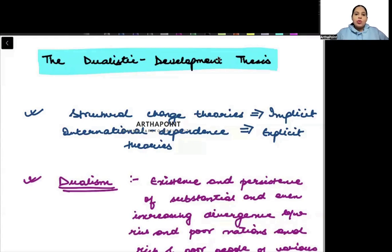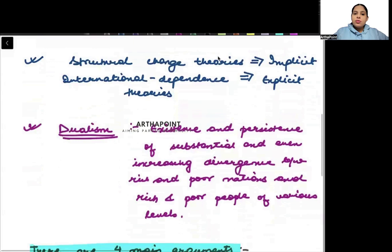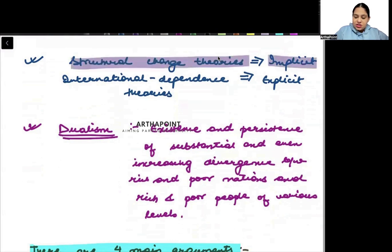In this lecture, we are going to understand more about what is the dualism theory. Before we do that, try to understand that there are two kinds of changes: one implicit, the other one explicit.